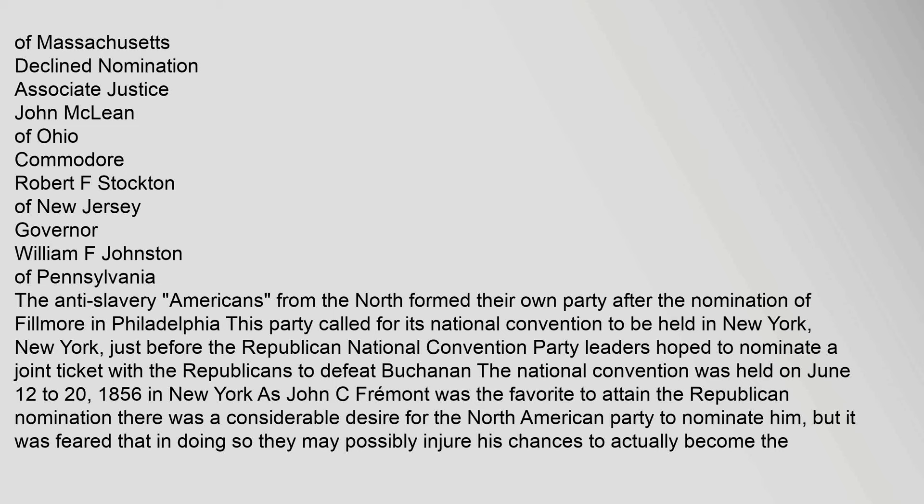Party leaders hoped to nominate a joint ticket with the Republicans to defeat Buchanan. The national convention was held on June 12–20, 1856, in New York. As John C. Fremont was the favorite to attain the Republican nomination, there was a considerable desire for the North American Party to nominate him, but it was feared that in doing so they may possibly injure his chances to actually become the Republican nominee.